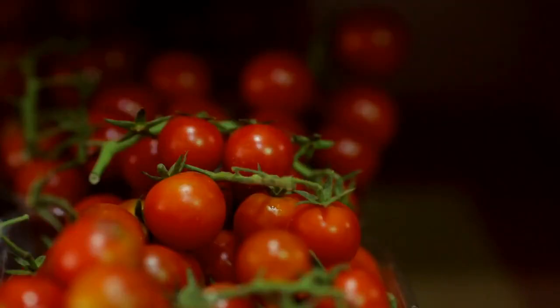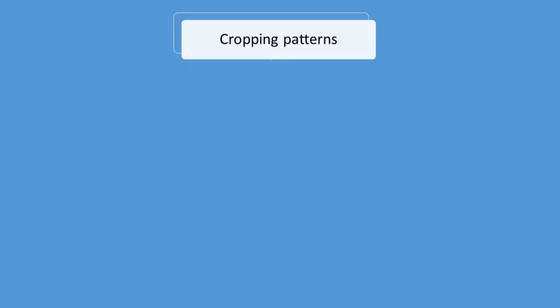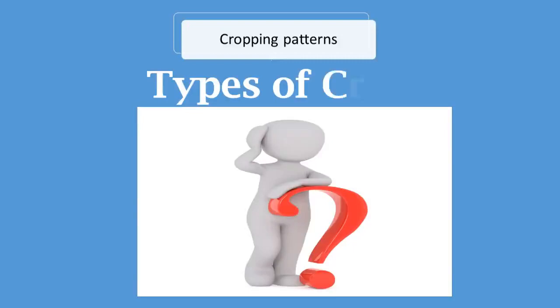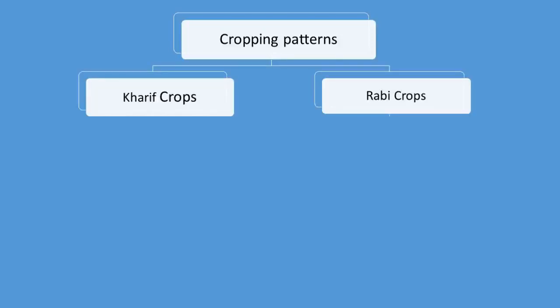Despite this diversity, there are two broad cropping patterns. And what are those cropping patterns? They are Kharif crops and Rabi crops.